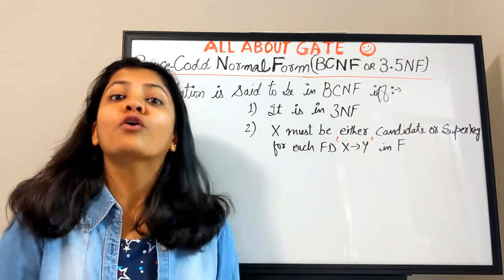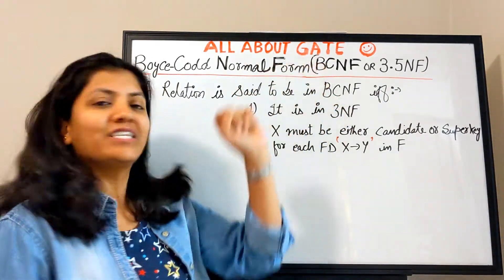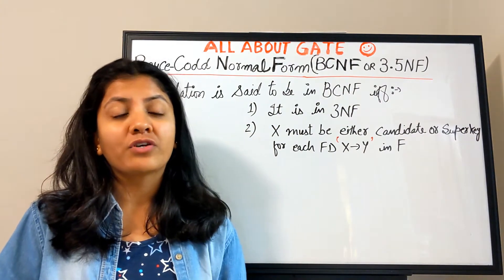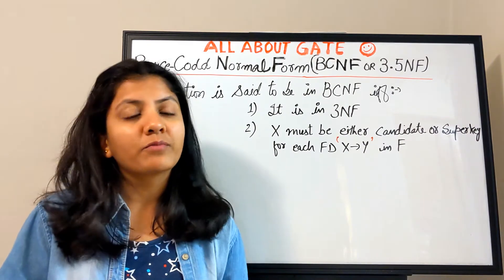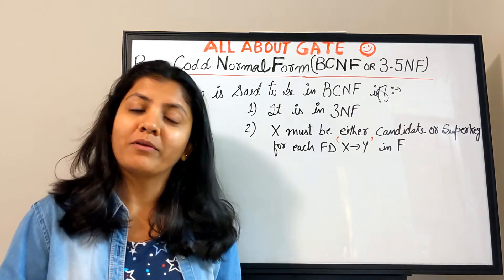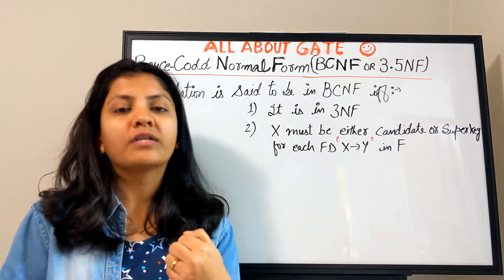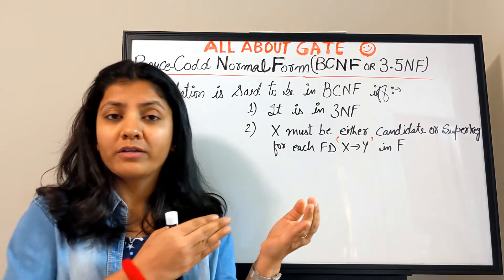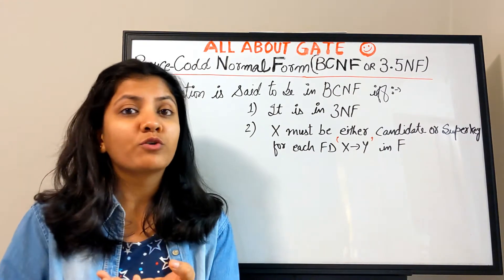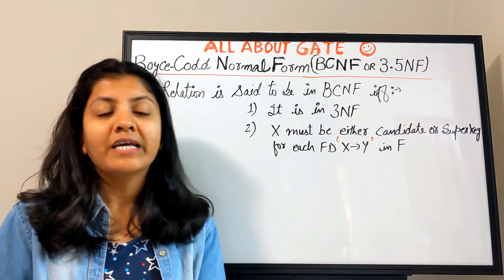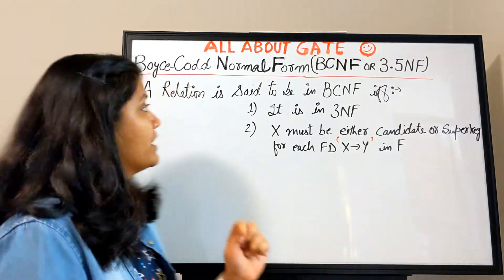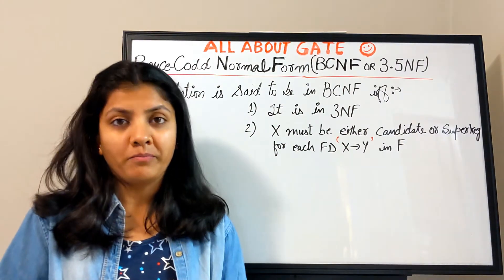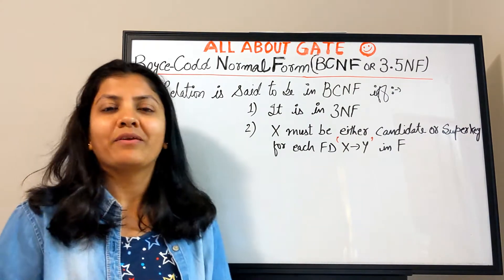Welcome to the YouTube channel where we talk all about GATE. We are studying DBMS, and in order to understand normalization we have been studying normal forms — starting from first, then second, then third normal form. Now we have reached the last normal form based upon functional dependency: BCNF, Boyce-Codd Normal Form.